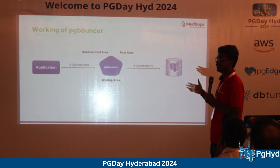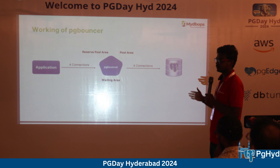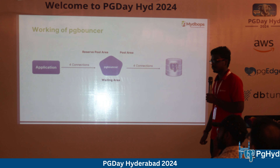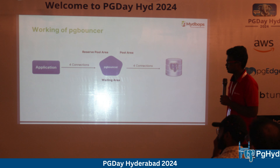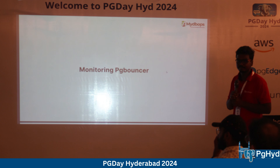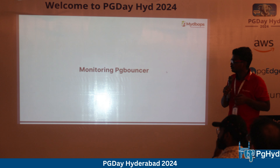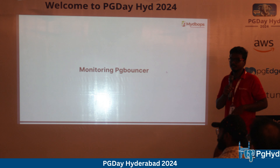PG Bouncer can only use a single CPU core, so placing it on a high-resource instance won't help it utilize those resources effectively. It's better to deploy it on any suitable instance.